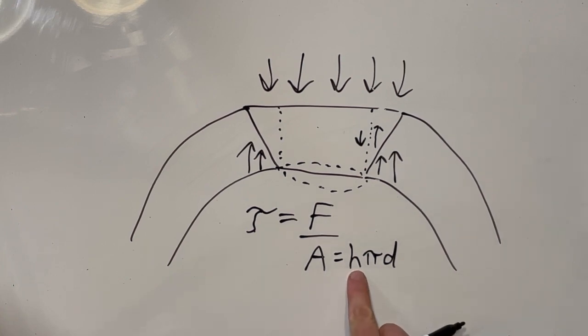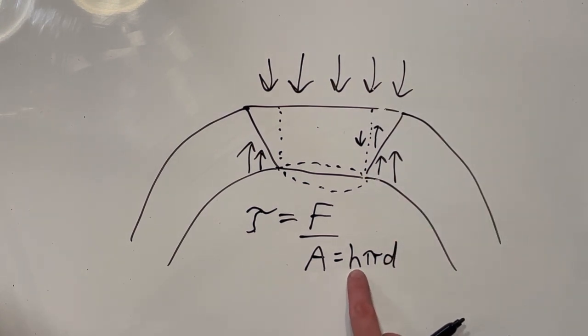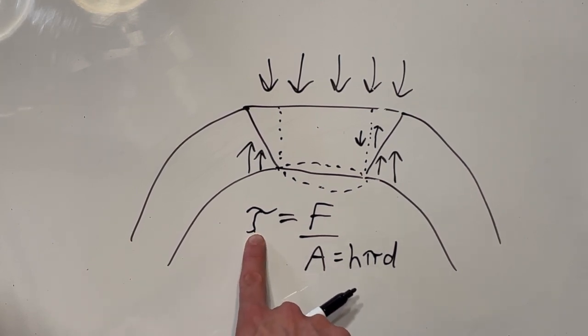And in this case if I double the thickness, the height is not squared here so I am only doubling the effective area which only reduces the shear stress by half. And if I would triple the thickness of the viewport I am only reducing the shear stress by a factor of three and not by a factor of nine.